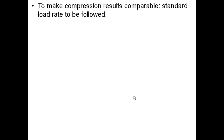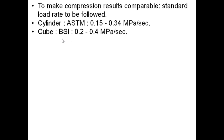To make compression results comparable, the standard load rate is to be followed compulsorily. For cylinder as per ASTM, the load rate should be 0.15 to 0.34 MPa per second. For cube as per British Standard, it is 0.2 to 0.4 MPa per second. For cube as per Indian Standard, the rate of loading should be 140 kg/cm²/minute, or 0.233 N/mm²/second.